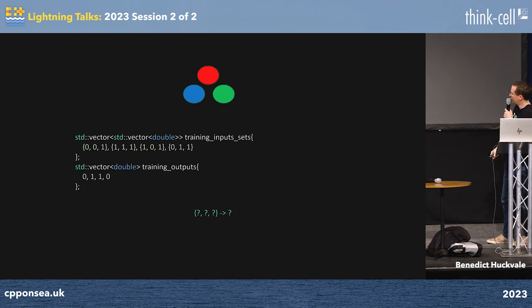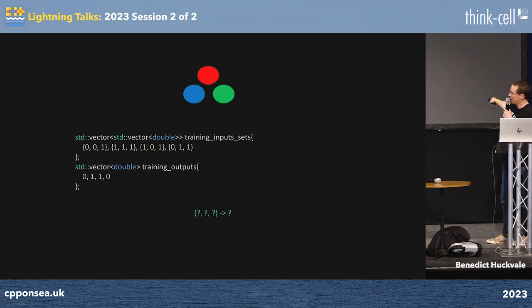This single neuron I'm going to create is going to take an input of three and make an output of one, or zero.